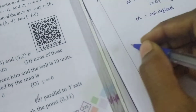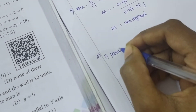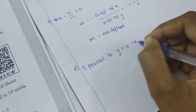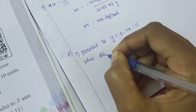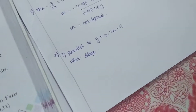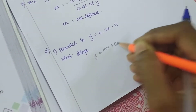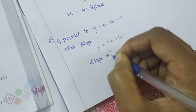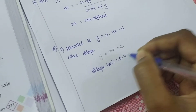Find the slope of a line which is parallel to the given line. Given: y equals 0.7x minus 11. This is in the form y equals mx plus c, so comparing, the slope m is the coefficient of x, which is 0.7.